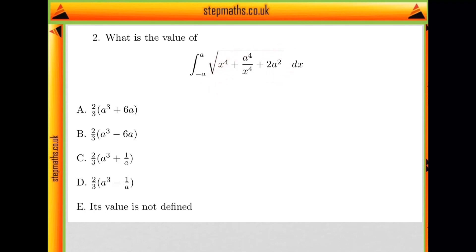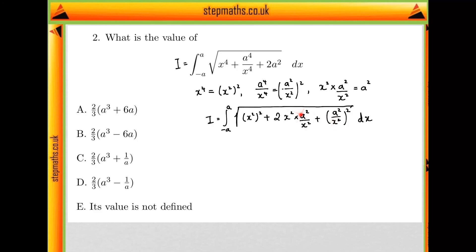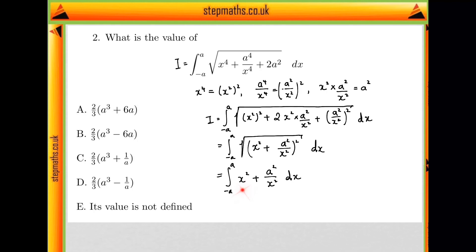So first, note that x to the 4 is x squared, squared. And a to the 4 over x to the 4 is a squared over x squared, all squared. And x squared times a squared over x squared is just a squared. So our integral — if I call this integral I — becomes this. We can factorize the inside into x squared plus a squared over x squared, all squared. So we have a square and a square root, and what we're really integrating is x squared plus a squared over x squared.